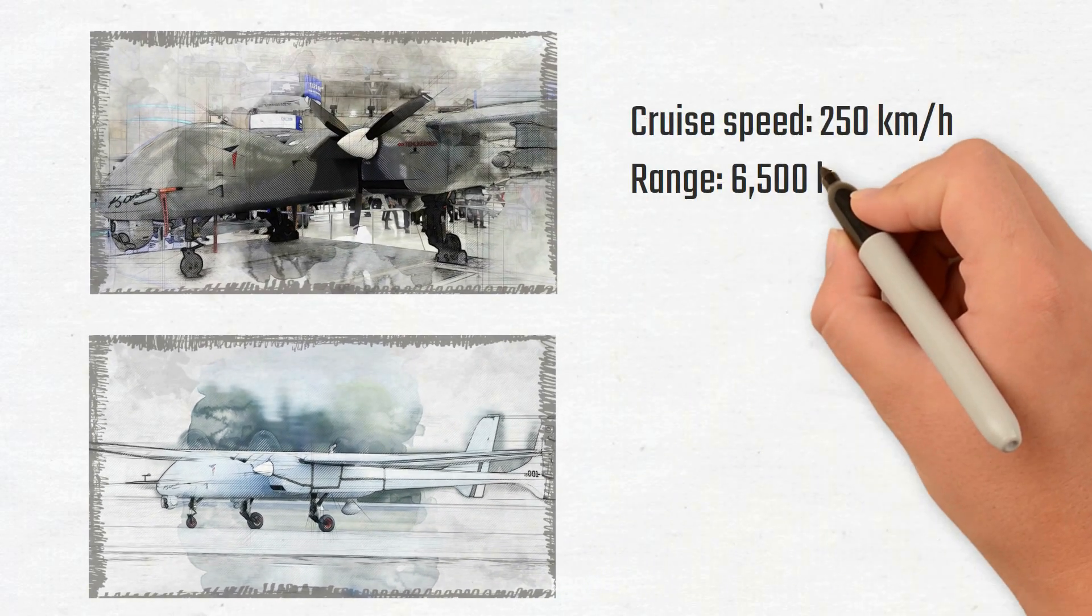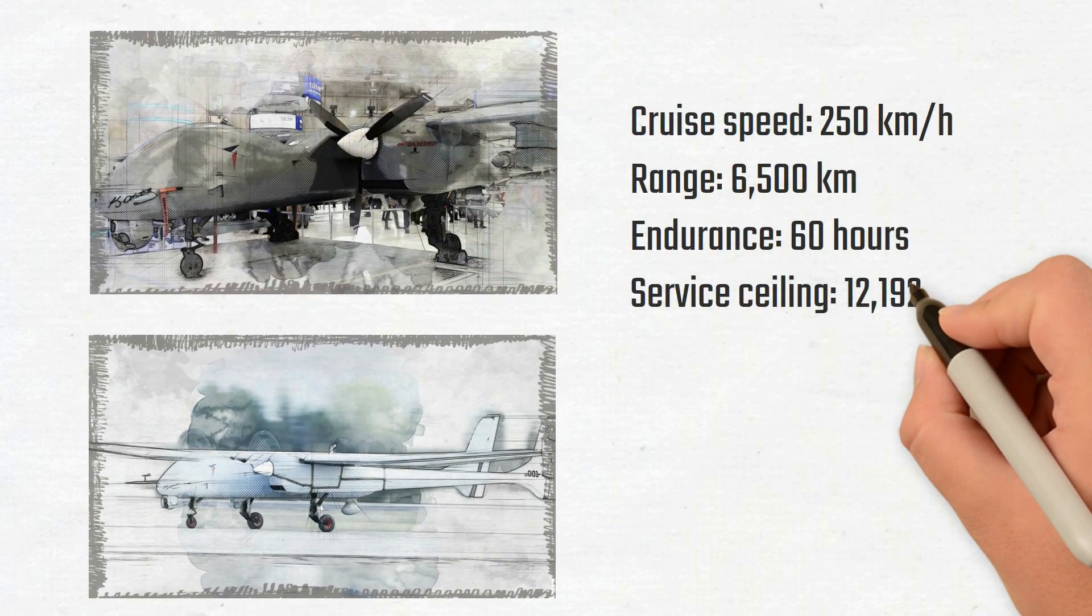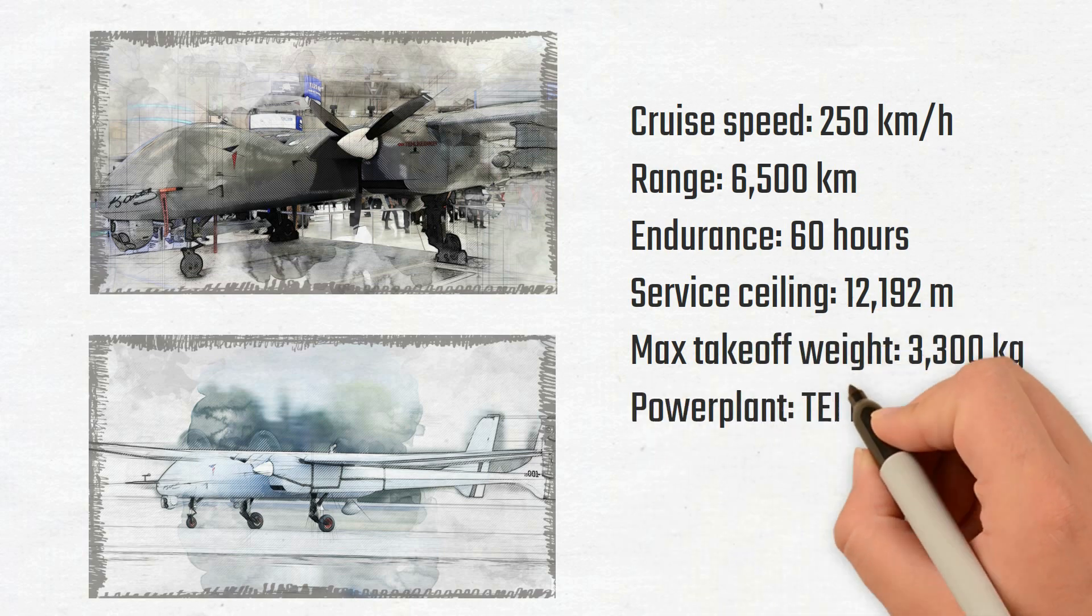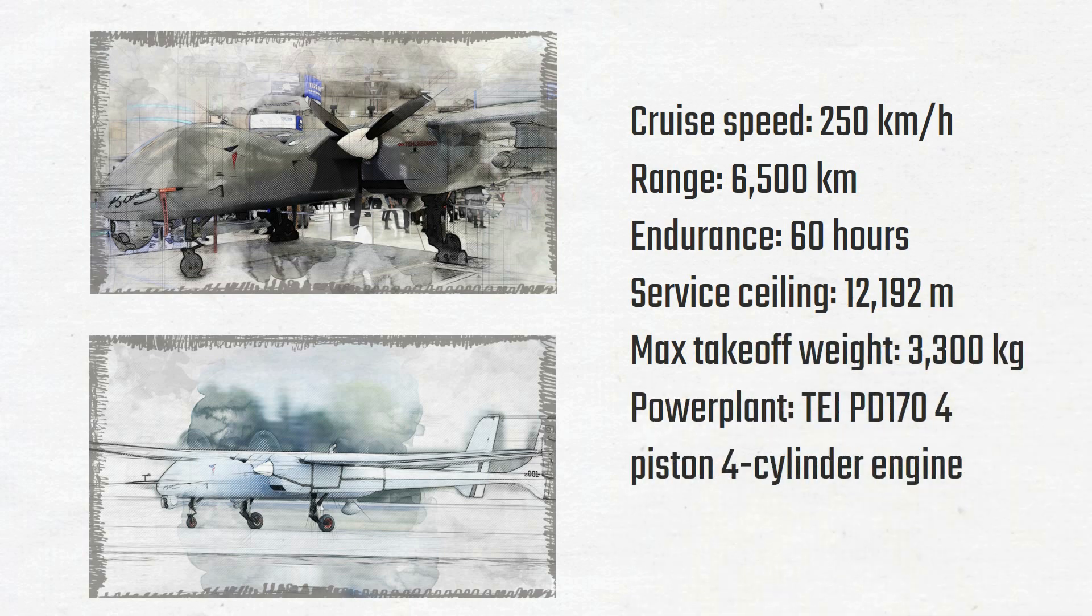It is intended for use as an unmanned combat aerial vehicle, long-term surveillance, signals intelligence, and sea patrol activities. Early in 2020, TAI planned to include armament kits and start producing the Aksungur.